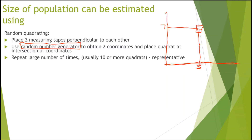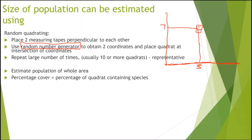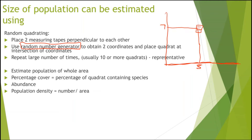The larger the number of quadrats we place, the more representative and accurate the sample will be. From this we can estimate the population of a whole area, estimate the percentage cover of a species by measuring the percentage of the quadrat which contains that species, measure the abundance of a given species, and also measure population density by dividing the total number of individuals by the whole area.